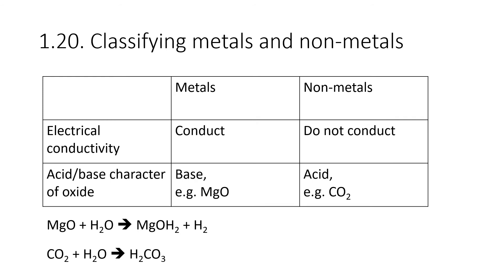For specification point 1.20, you have to be able to classify metals and non-metals based on their electrical conductivity and the acid-base character of their oxide. Regarding electrical conductivity, it's very simple: metals conduct, non-metals don't. Regarding the acid-base character of their oxide, metal oxides are basic — when you react them with water you form an alkali. For example, magnesium oxide reacting with water forms magnesium hydroxide, the alkali, and hydrogen gas. When non-metal oxides react with water they form acids — for example, carbon dioxide and water makes carbonic acid.